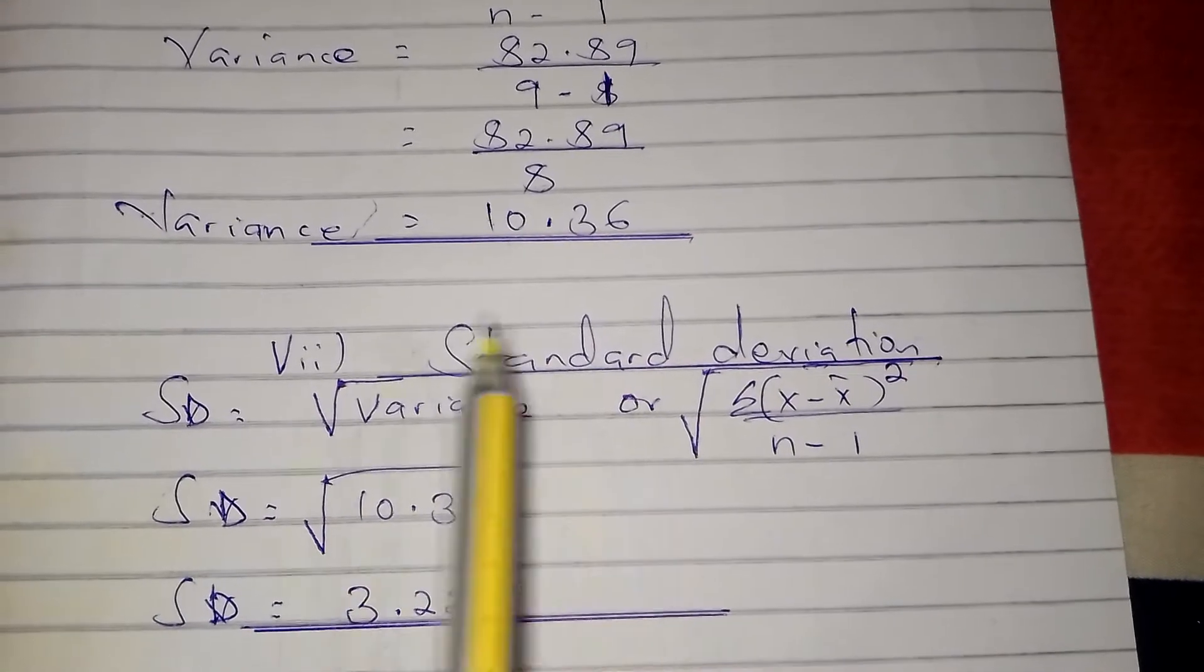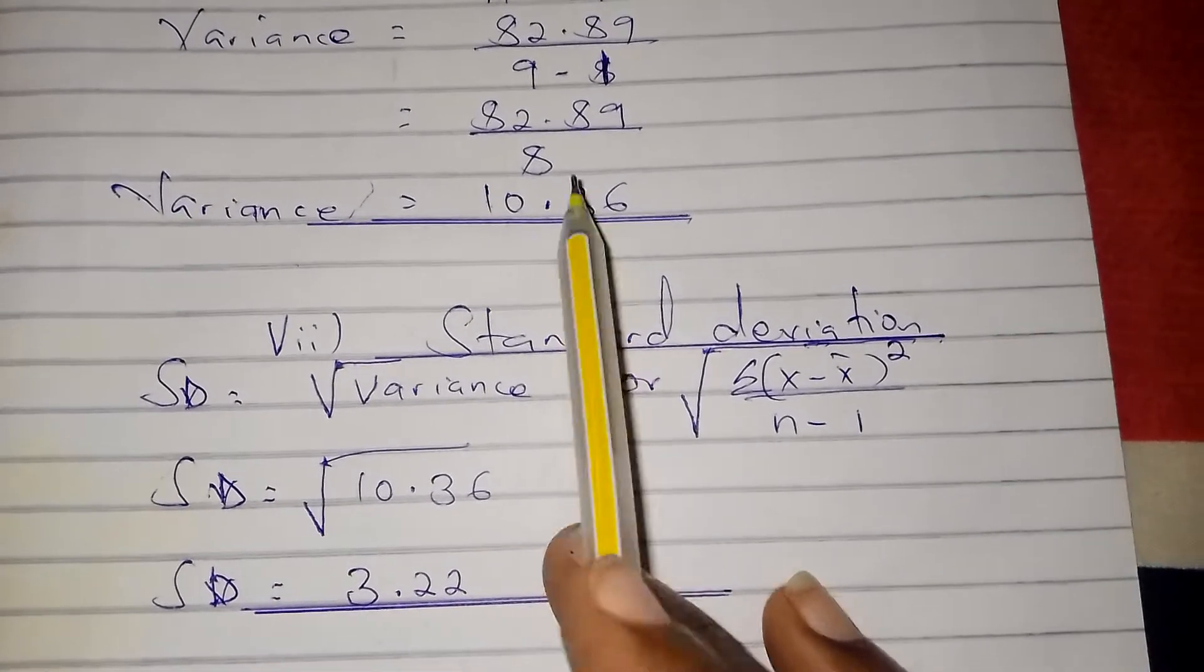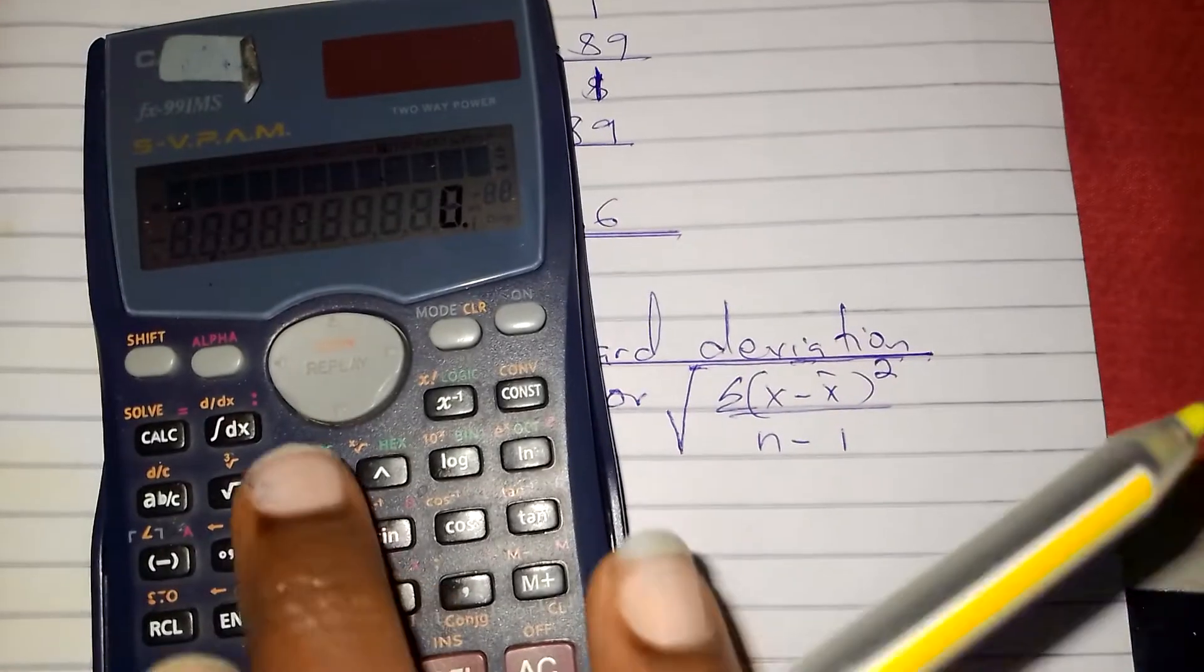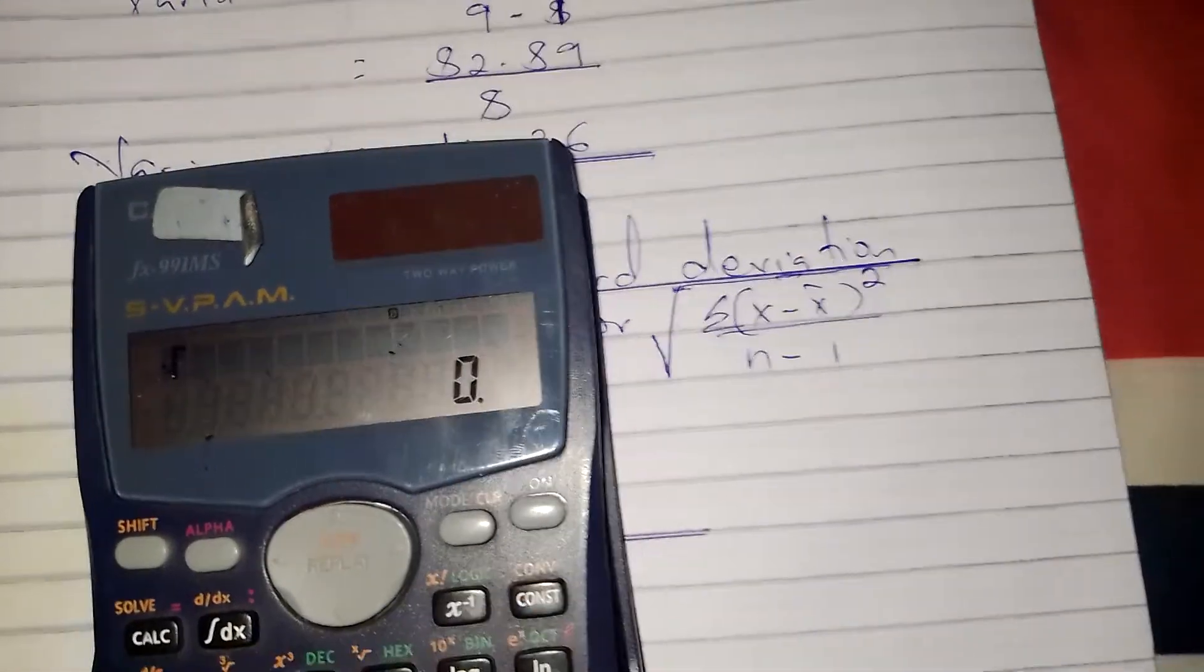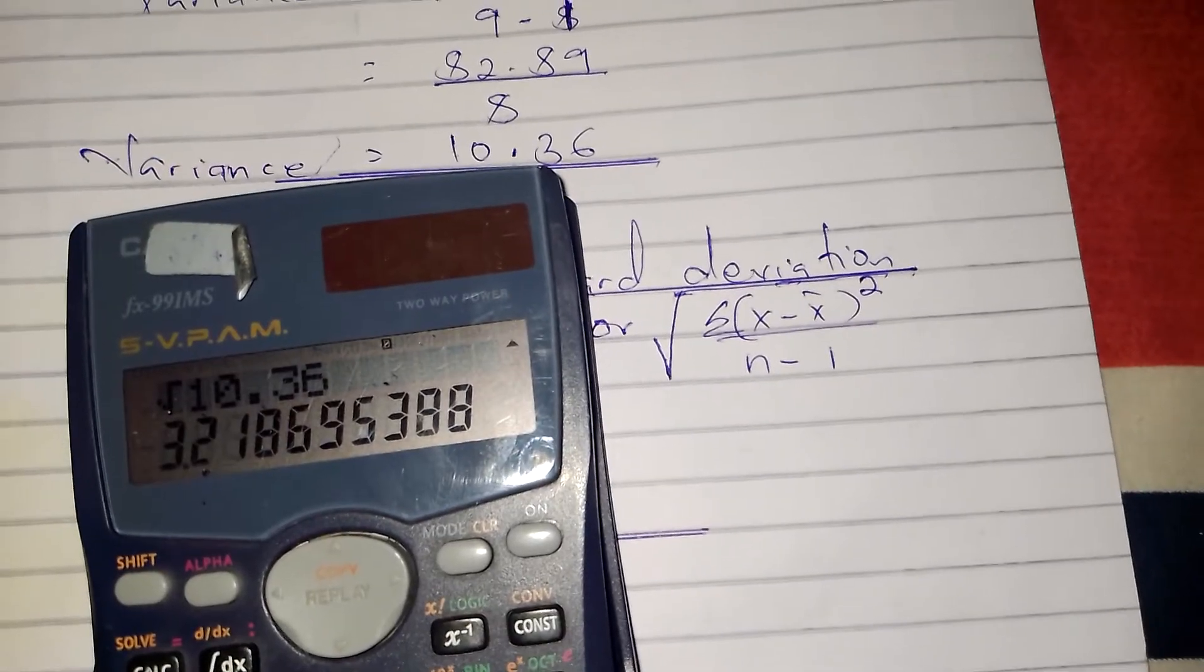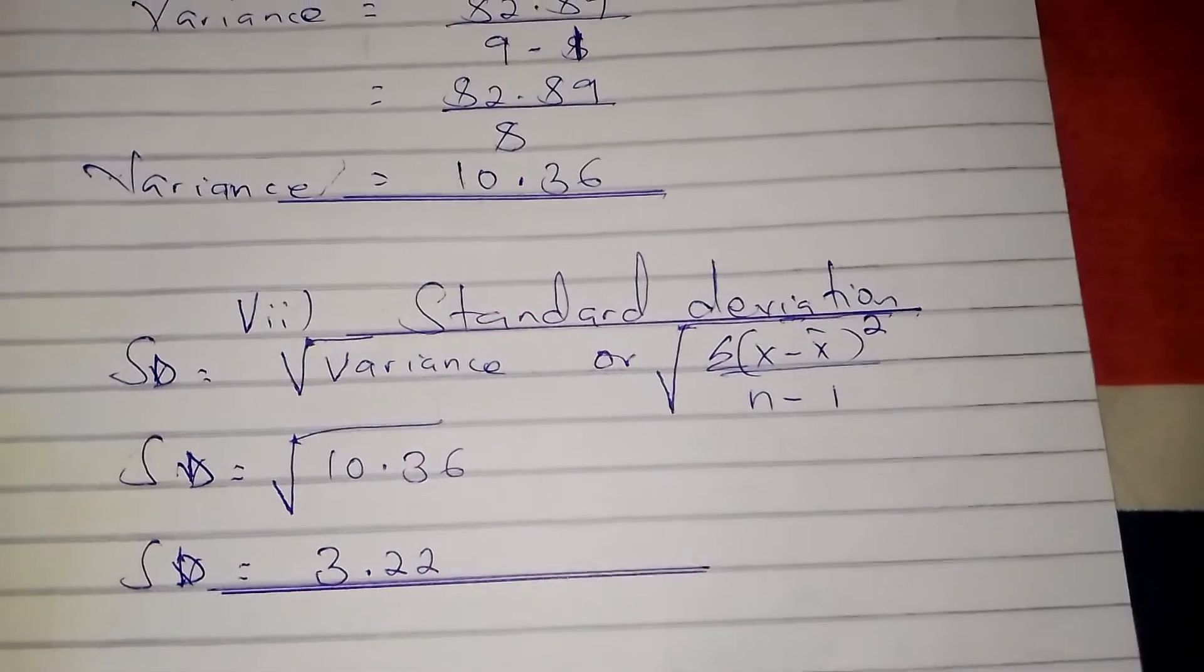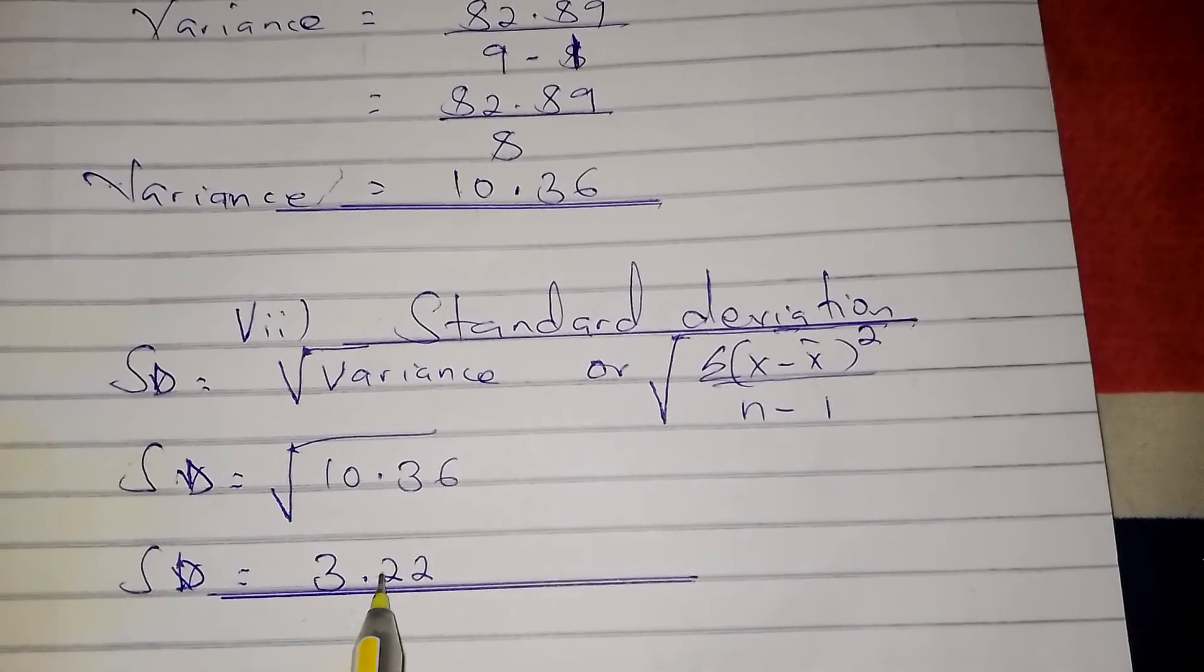We put the square root of variance, and the variance we got is 10.36, so we square root it. √10.36 = 3.21. If we round off it is 3.22. So the standard deviation is 3.22.